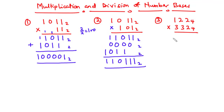Let's move on to the third example. We are going to work in base 4. 2 times 2 is 4. 4 divided by 4 is 1 remainder 0. So we have 0 here and carry on 1. 2 times 2 is 4, plus 1 is 5. So this becomes 1 remainder 1. We have 1 and carry on 1. 2 times 1 is 2, plus 1 is 3. Now, let's move on to the second value, which is 3.